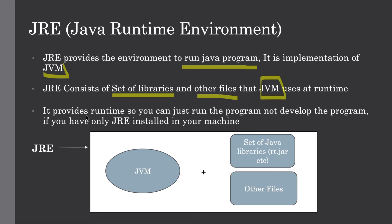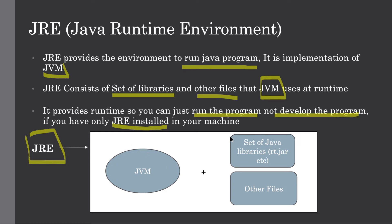JRE provides the runtime, so you can just run the program, not develop it, if you have only JRE installed on your machine. If you just want to run Java programs, you need the compiled .class files and JRE installed. You can see that JRE consists of JVM and a set of Java libraries and other files, so to run a Java program you need JRE installed on your machine.